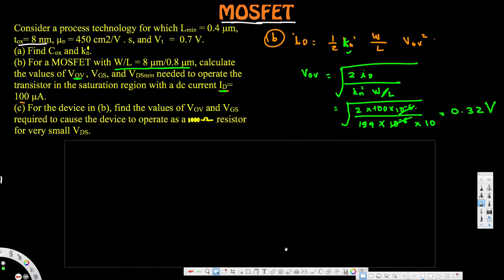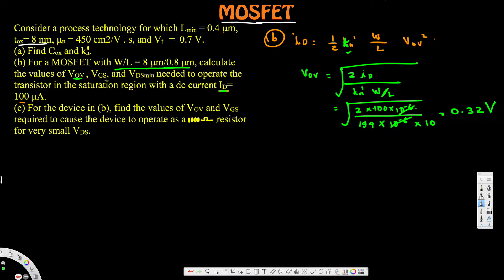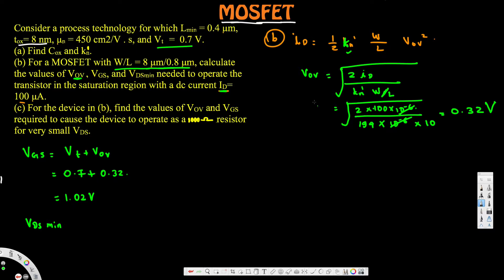Next, V_GS = V_T + V_OV. V_T is the threshold voltage = 0.7 V, and V_OV = 0.32 V, so V_GS = 0.7 + 0.32 = 1.02 V. For the saturation region, V_DS minimum equals V_OV, so V_DS_min = 0.32 V.